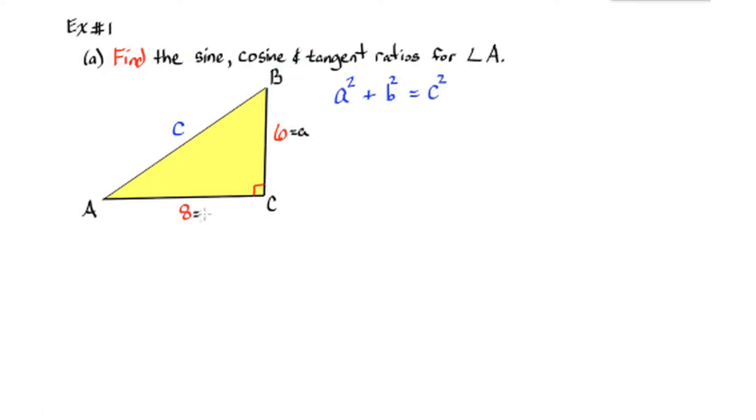Example 1. Find the sine, cosine, and tangent ratios for angle A. So we're given a right triangle with the legs 6 and 8. And we need to find the hypotenuse C in order to find all the ratios. So I substitute my legs into my equation, solve for C, and I get C equals 10. So there's my hypotenuse of 10.